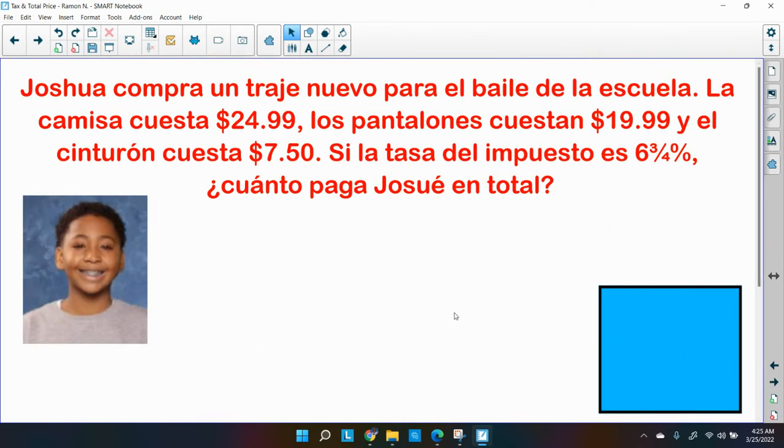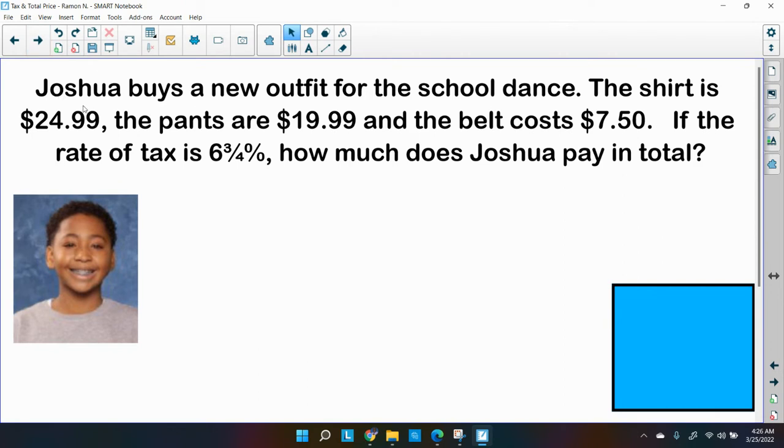So here's a question about my student, Joshua. And here it is in English. So Joshua buys a new outfit for the school dance. The shirt is $24.99. The pants are $19.99. And the belt costs $7.50. If the rate of tax is six and three fourths percent, how much does Joshua pay in total? So he wants to go to the dance. So there are a couple of things we should know when we're working on this problem. We want to know how much is he going to pay in total? Well, let's see what he bought.